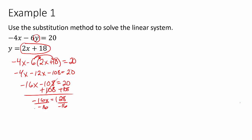There is a trick here — I may not know off the top of my head what 128 divided by negative 16 is. What we can do is simplify by dividing by 2, 4, or even 8 to make it more manageable. If I simplify by 2, I get 64 over negative 8, and that gives us x equals negative 8.